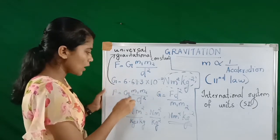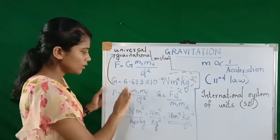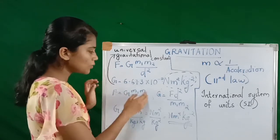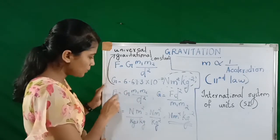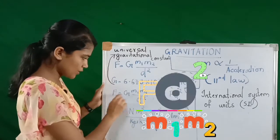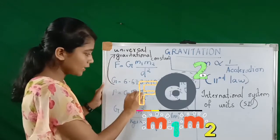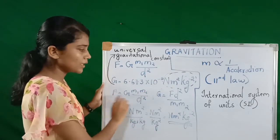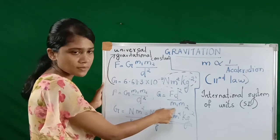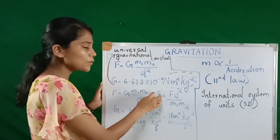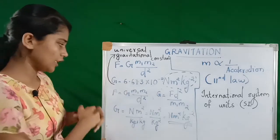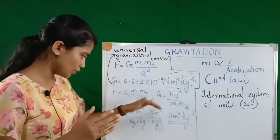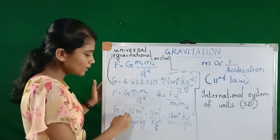To find the SI unit for G, we keep G on one side and bring all the other units to the other portion. We multiply F into d squared and divide by m1 m2. So F d square becomes the numerator and m1 m2 becomes the denominator. Now we can calculate the SI unit for G. The SI unit for force is Newton.